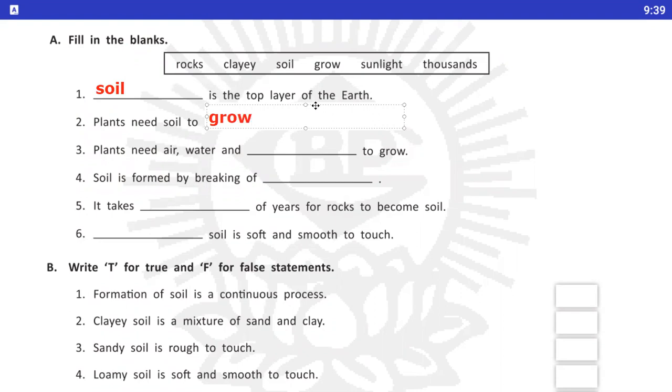Number 3, Plants need air, water and dash to grow. Plants ko grow karne ke liye kis-kis chieze ki jaroorat hooti hai? Air, water and sunlight. Number 4, Soil is formed by breaking of dash. Soil kis ke break hoonay se bani? Rocks.